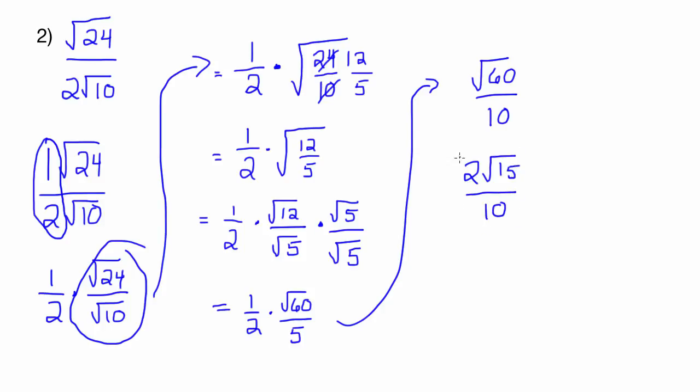And then check one more time. Make sure nothing can divide out. And look, 2 and 10, they have a common factor of 2. So I'm going to divide the numerator and the denominator by 2. And this goes to a 1. That goes to a 5. So I end up with √15 over 5. And that's going to be your answer right there.